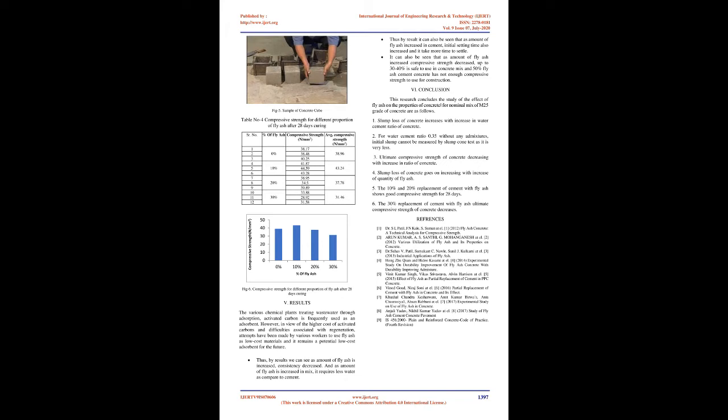Results. In various chemical plants treating wastewater through adsorption, activated carbon is frequently used as an adsorbent. However, in view of the higher cost of activated carbons and difficulties associated with regeneration, attempts have been made to use fly ash as a low-cost adsorbent material, and it remains a potential low-cost adsorbent for the future. By these results, we can see that as the amount of fly ash is increased, consistency decreased.